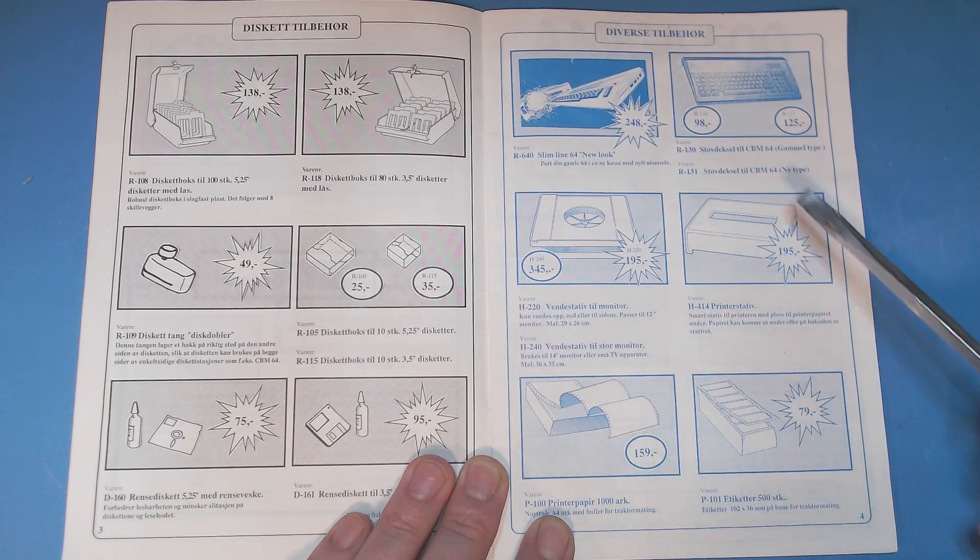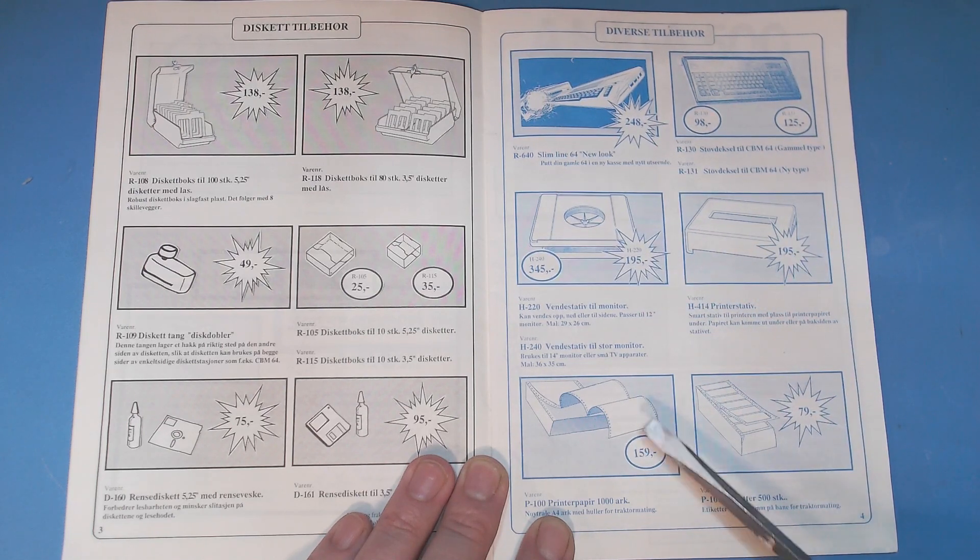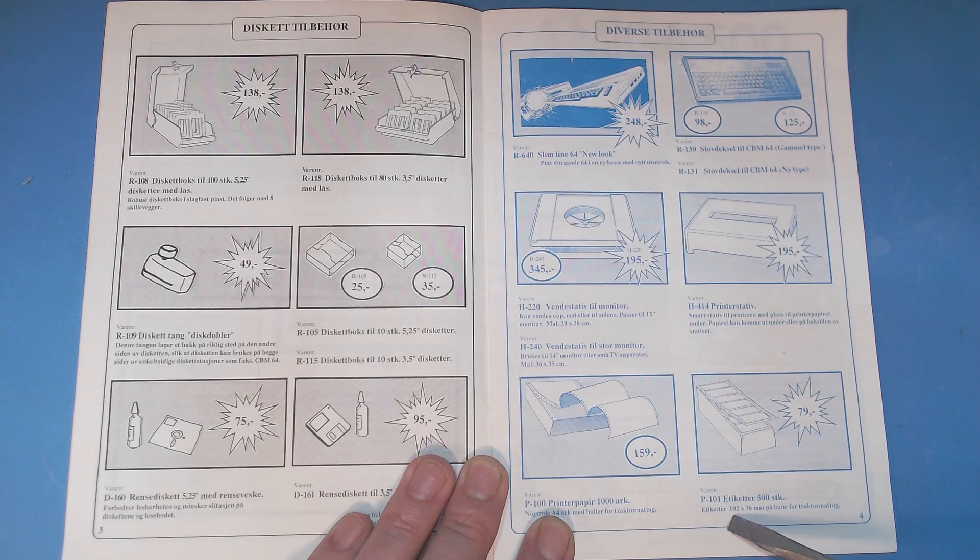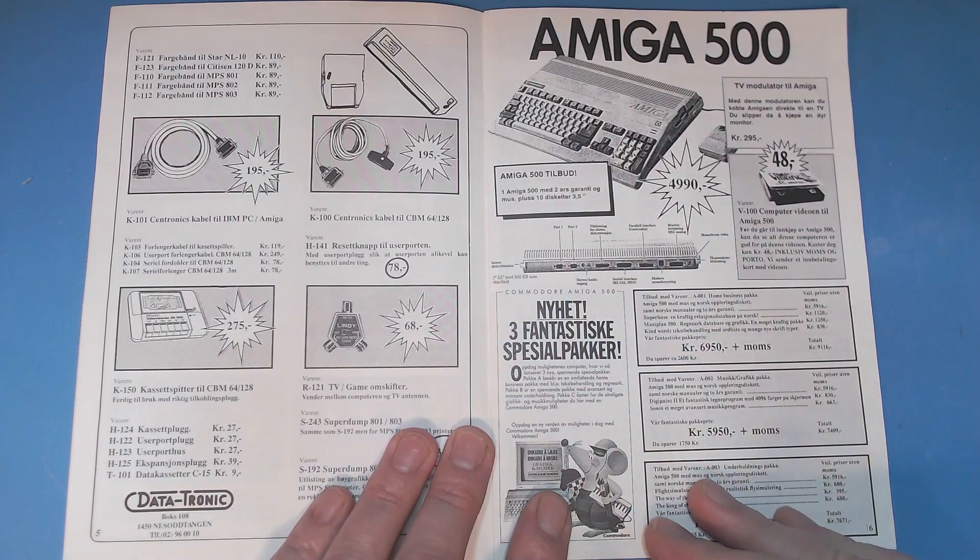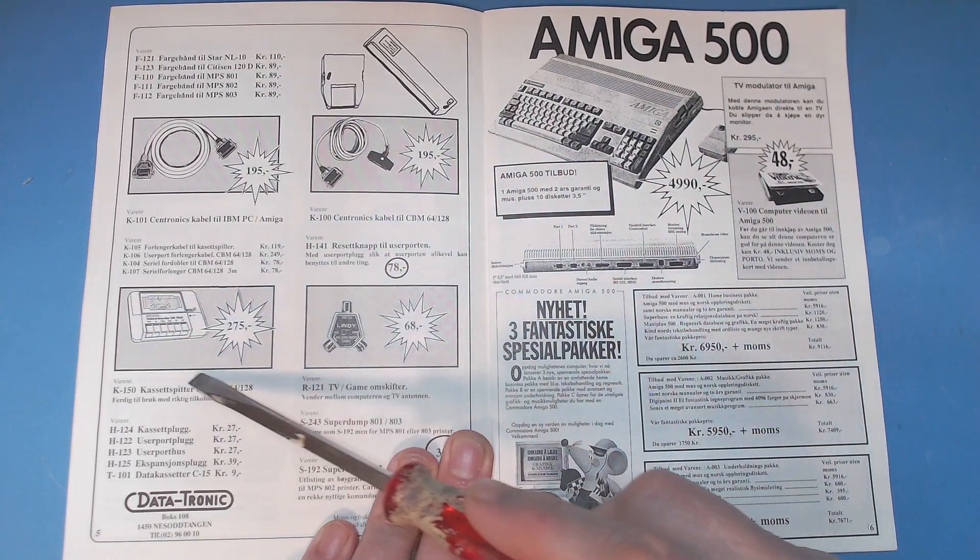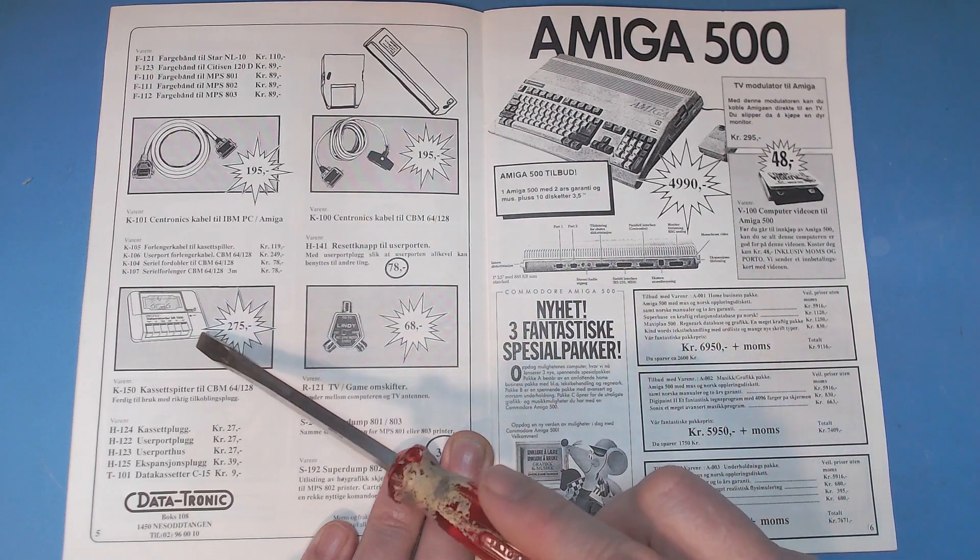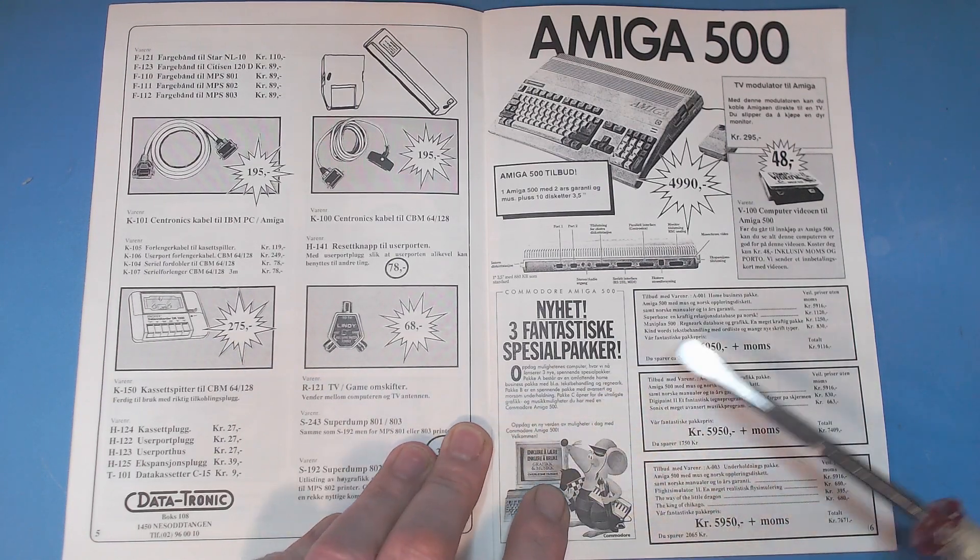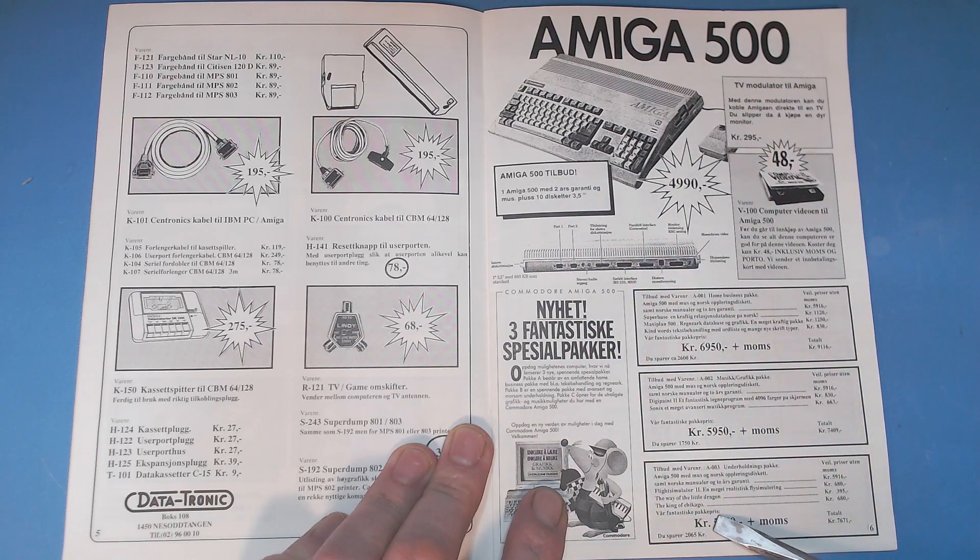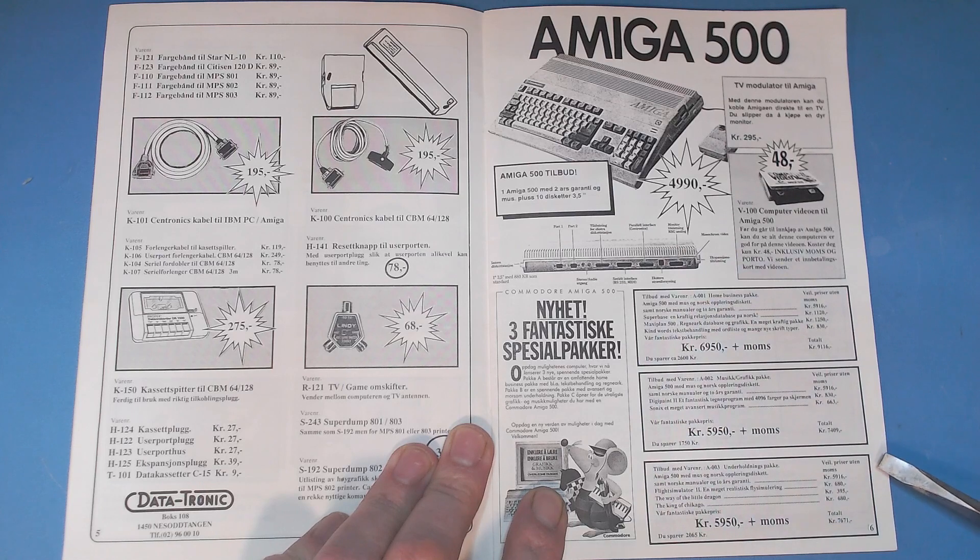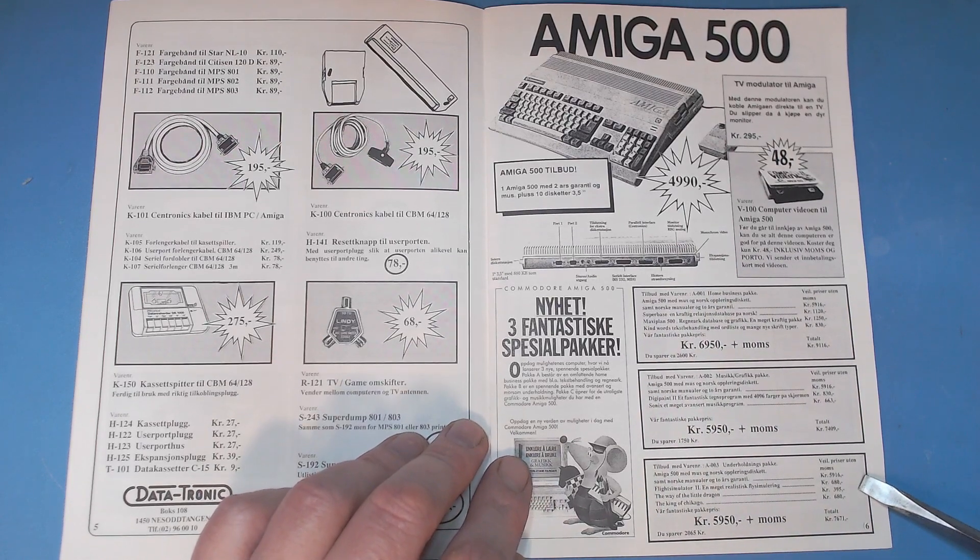You can read from their description here: 'Slimline 64 new look, put your old bread bin C64 in a new box and make it a new slimline appearance.' Dust covers, swivel table bases, old-fashioned printer paper, labels for the five and a quarter inch floppy, ink cartridges, different cables, a copy cassette deck - this was not the original C2N, this is a copy that looks almost the same. I actually have at least one of those. The Amiga 500 in different packages bundled with software and other equipment, much in the same manner as they were in UK back in the day.